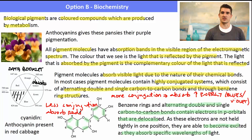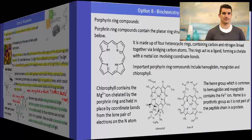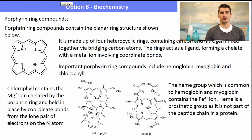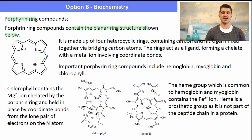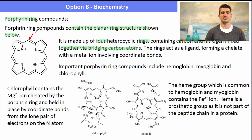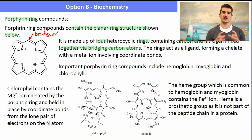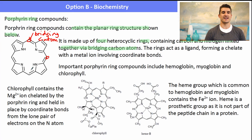A porphyrin compound contains the porphyrin ring structure — four heterocyclic rings containing carbon and nitrogen, joined together by bridging carbon atoms. These rings act as ligands, forming a chelate with a metal ion via coordinate bonds. Remember that a chelate is like a cage: the metal ion sits in the middle, held in place by coordinate bonds from lone pairs on the nitrogen atoms.